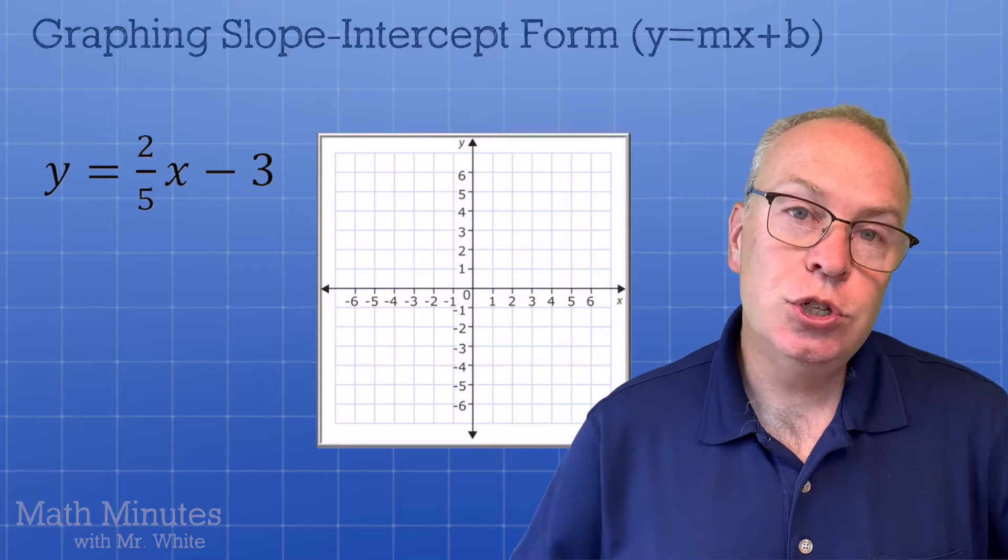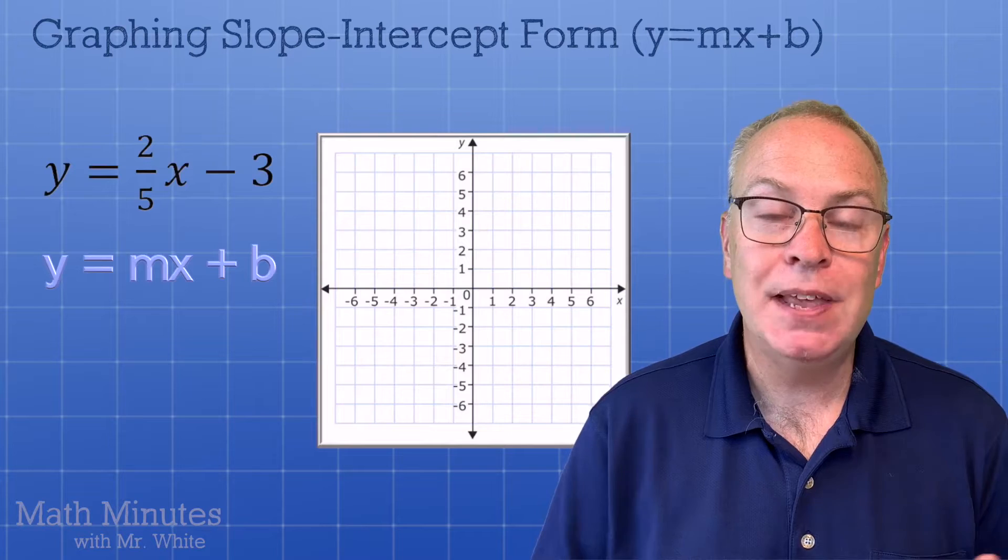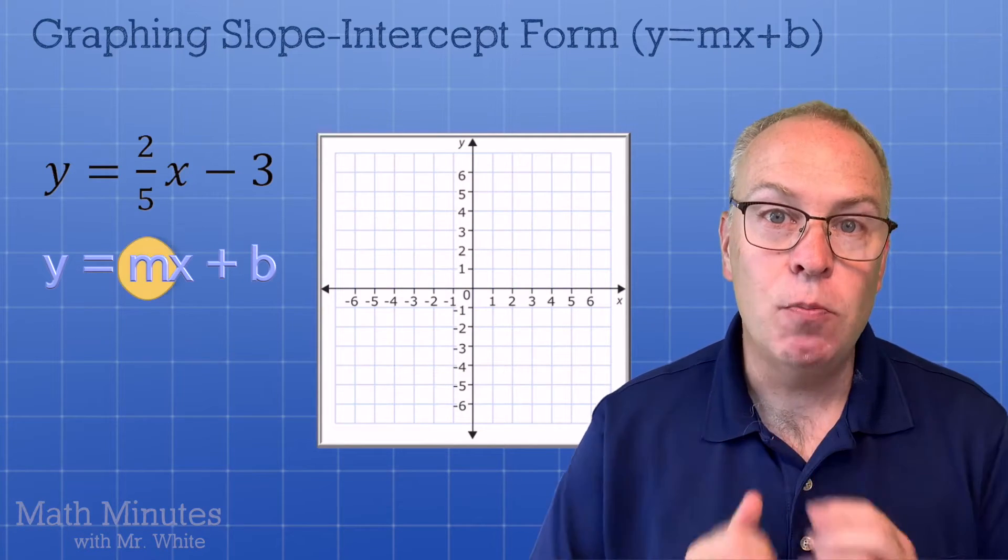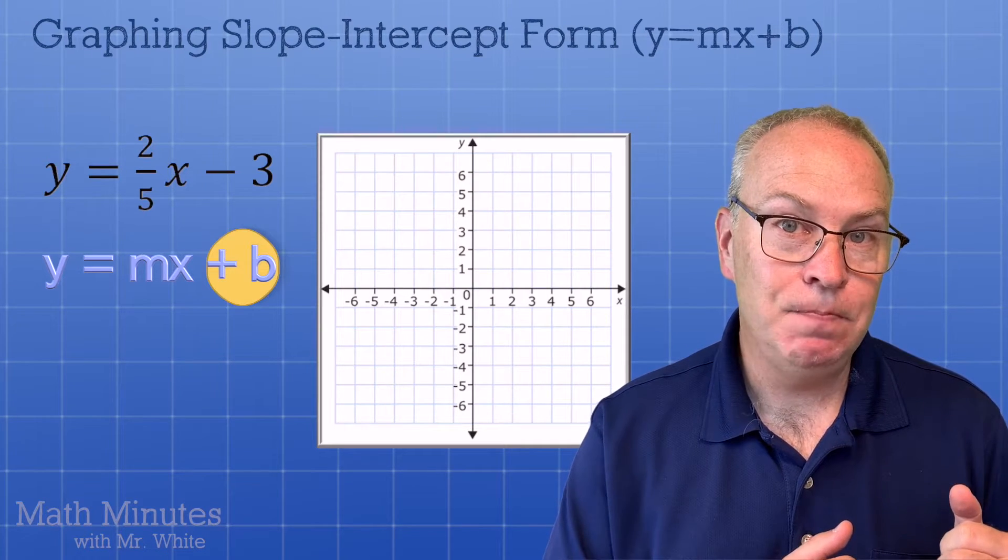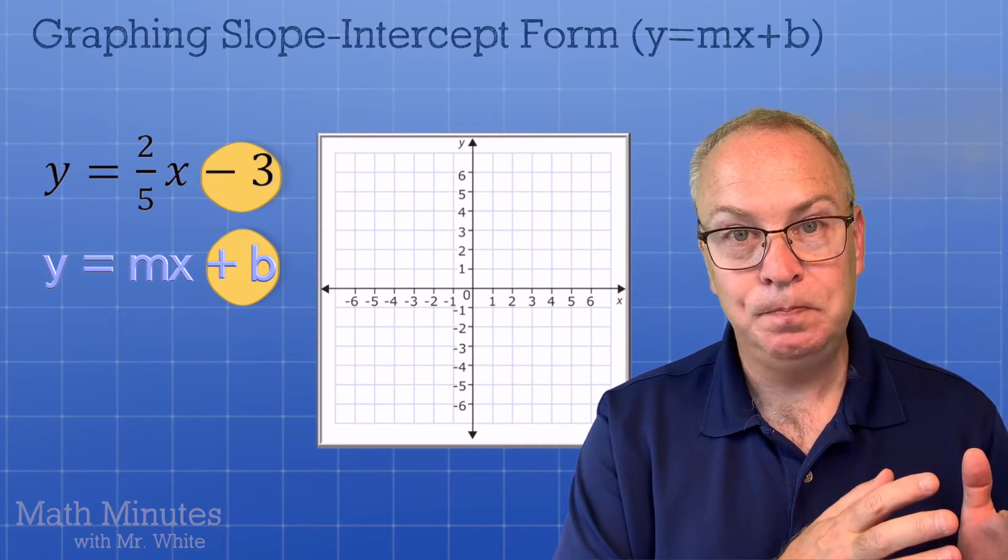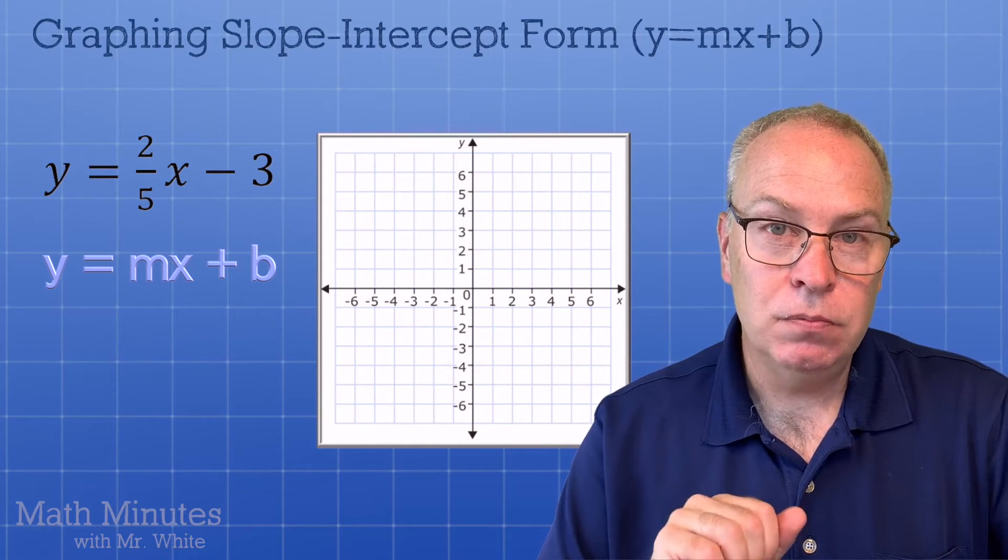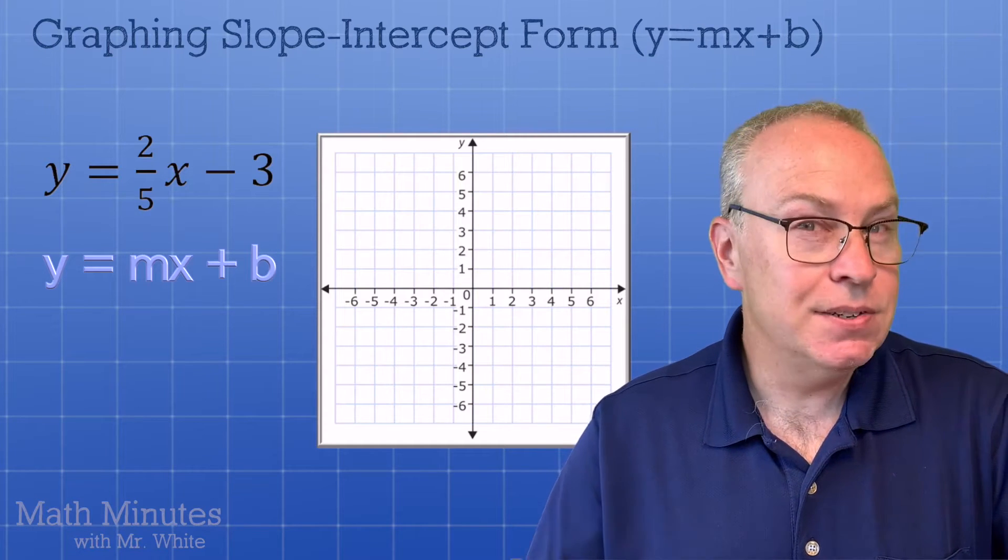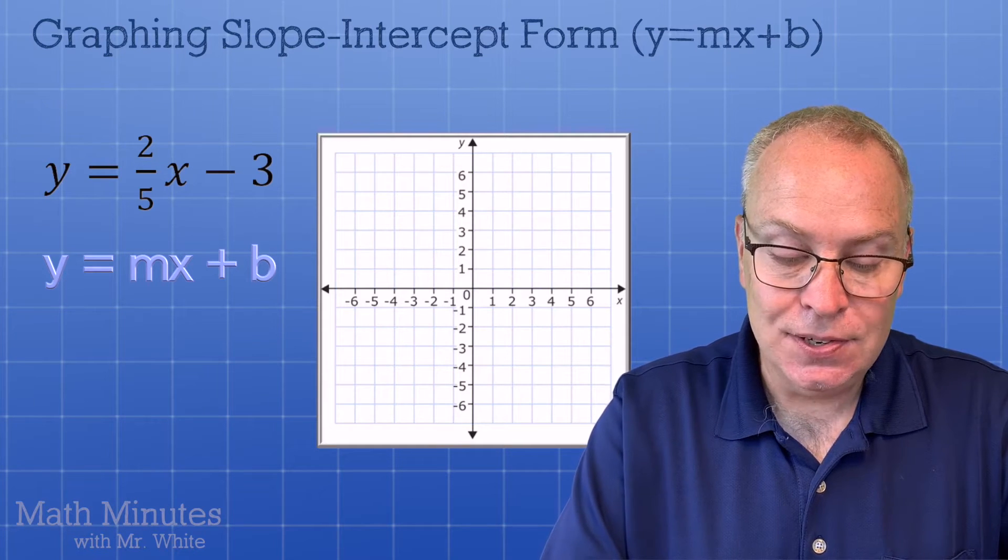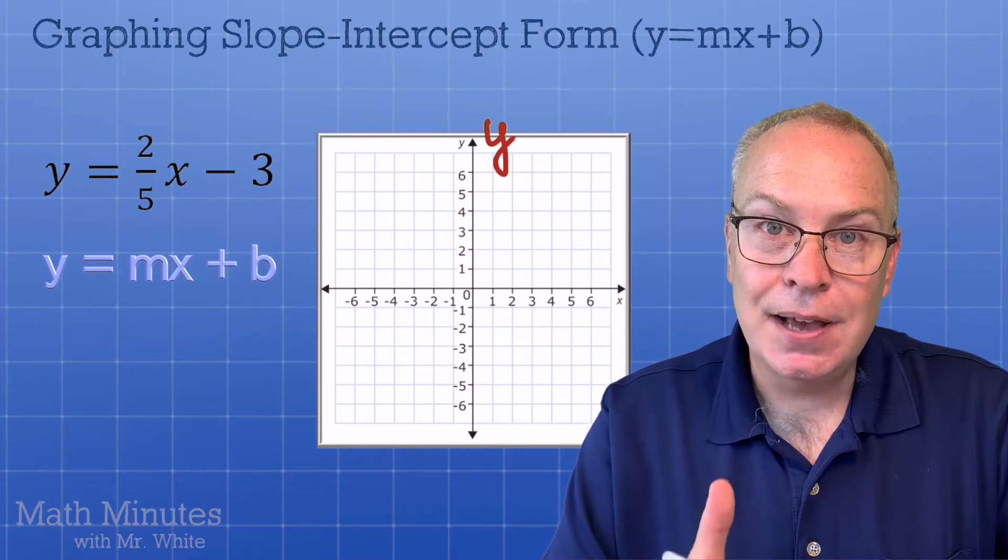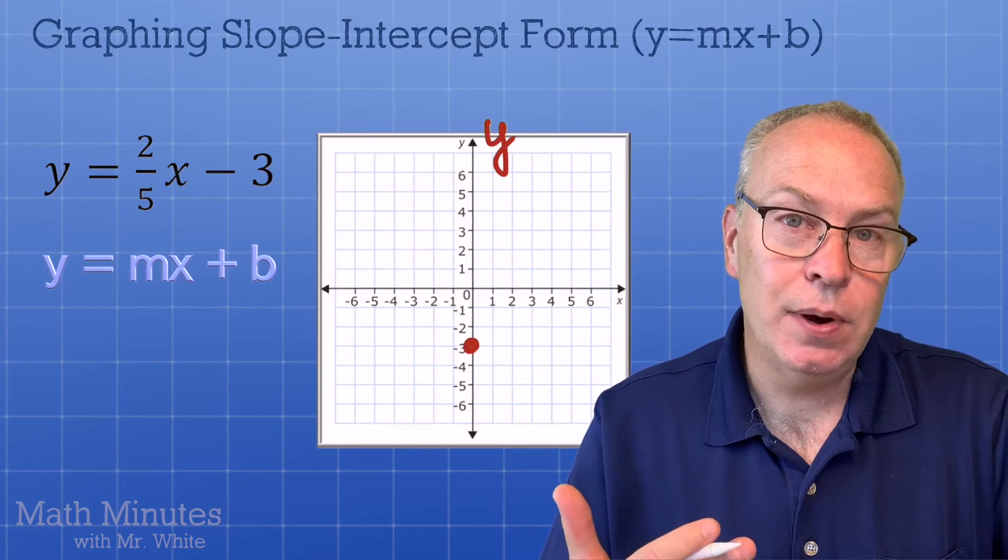We have y equals two-fifths x minus three. Do you see that that's in y equals mx plus b form? That's called slope-intercept form because the slope is staring at us. It's two-fifths. And the y-intercept is staring at us. It's the negative three. So I want you to ignore the slope for now. We're going to use that b value. b is negative three. That's the y-intercept. So we find the y-axis, that's the up and down axis, and we go down three because the y-intercept is at negative three.